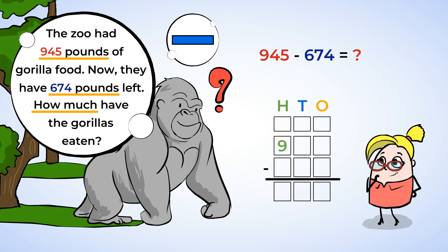945 has 9 hundreds, so we'll write a 9 here in the hundreds place. 40, that's 4 groups of 10. So a 4 in the tens place. And 5, that's 5 ones. So we write a 5 in the ones place.